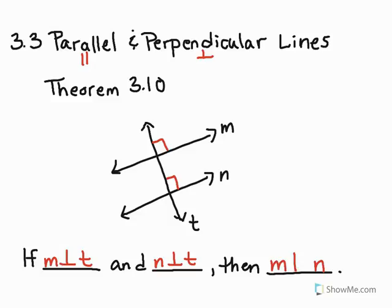If you said they are parallel, you are correct. So if you have two lines that are perpendicular to the same transversal, then they are both parallel to each other. That is all that theorem states.